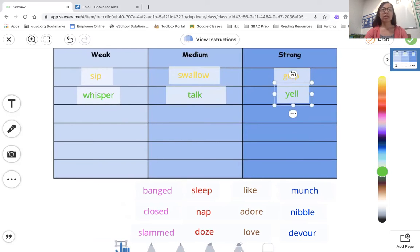All right scholars, we're going to take a look. You're going to be looking at the rest of those words and you're going to put them in order: weak, medium, and strong. So you'll look at it. Banged, closed, slammed. Think about a door. If you banged it, you closed it, or you slammed it. Which is weak? Which is medium? Which is strong?